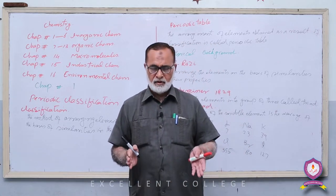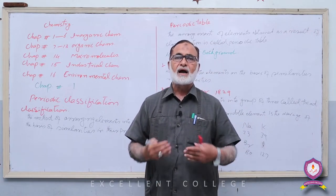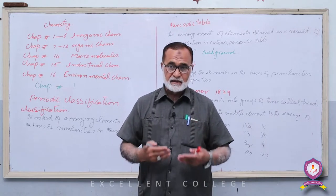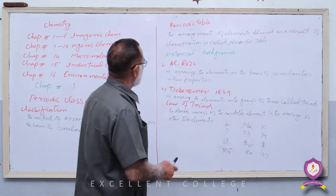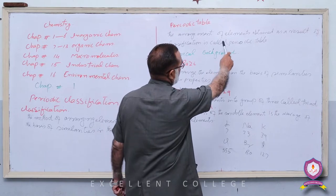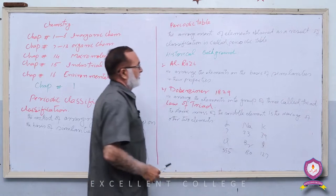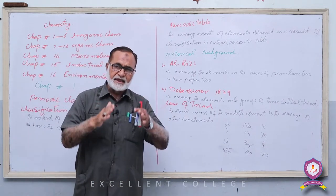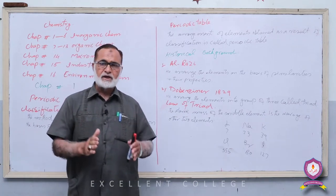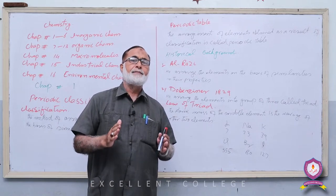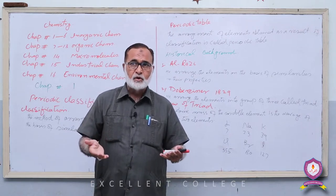Elements کو similarities in properties کی بنیاد پر groups میں تقسیم کرنے کے طریقے کو classification کہتے ہیں۔ اور Periodic Table کیا ہے؟ The arrangement of elements obtained as a result of classification is called Periodic Table۔ اس classification کے نتیجے میں جو arrangement آتی ہے اس table کو Periodic Table کہتے ہیں۔